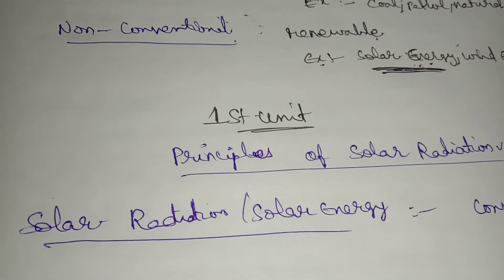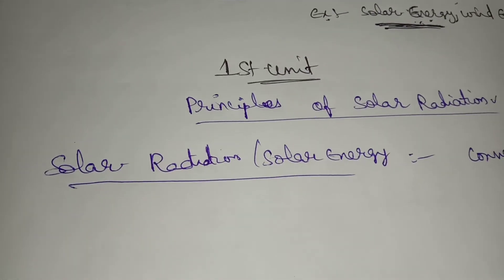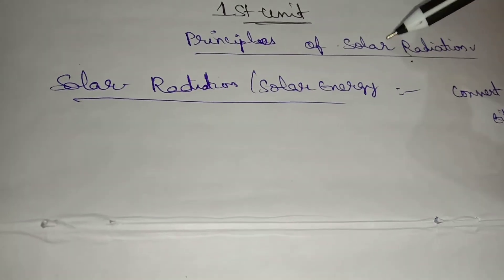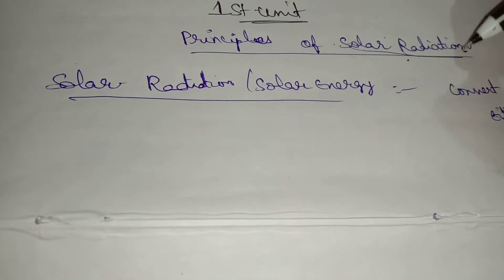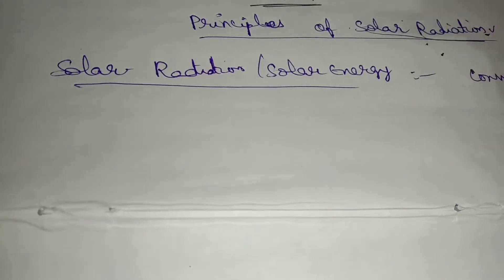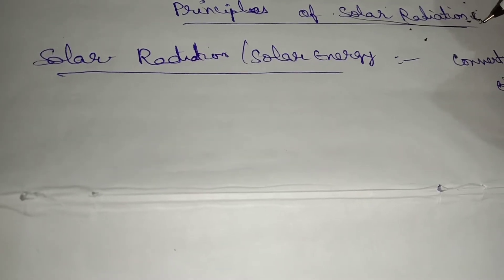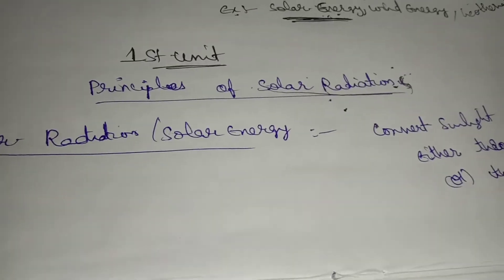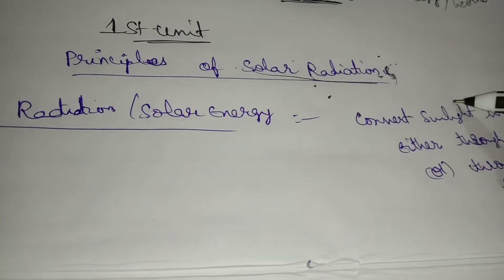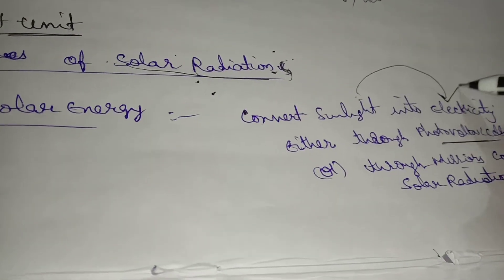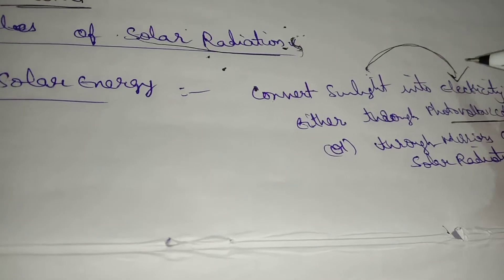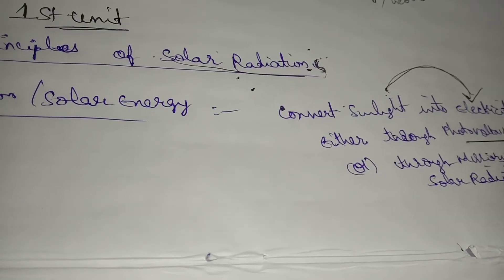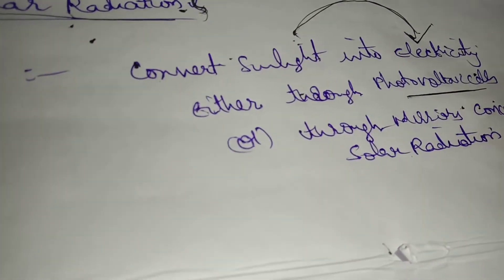Non-conventional sources are also called renewable sources. The first unit is principles of solar radiation. Solar radiation is what? It is the process of converting sunlight into electricity, either through photovoltaic cells or through mirrors — that is called concentrated solar radiation. Is it clear? Yes.